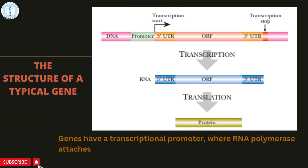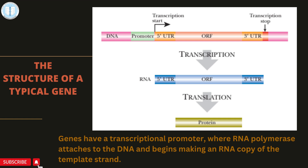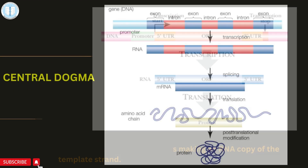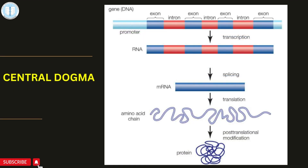Genes are regions of DNA that are transcribed to give RNA. The gene has the promoter region plus transcriptional start and stop points that flank the actual message. The RNA has three regions: the 5' UTR (untranslated region), which contains information important for making the protein; the ORF (open reading frame), which has the actual coding region translated into amino acids during translation; and the 3' UTR, which contains other important regulatory elements.